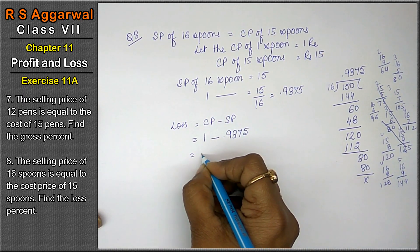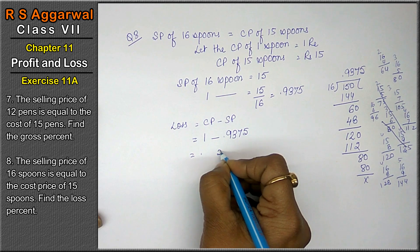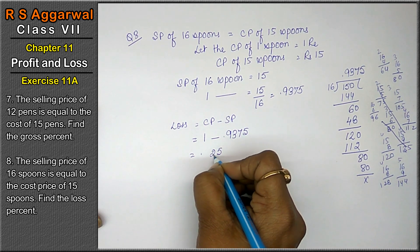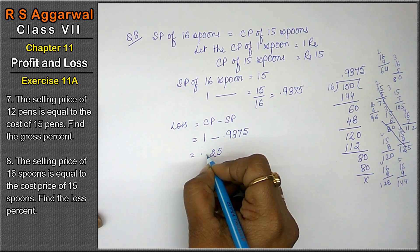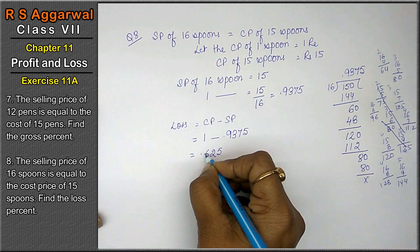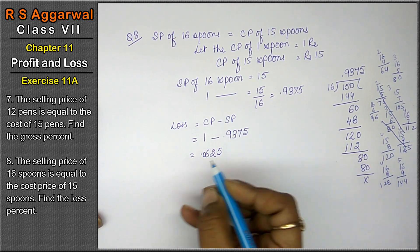Now, what is the loss? 1.0 minus 0.9375: 10 minus 5 is 5, 9 minus 7 is 2, 9 minus 3 is 6, and 9 minus 9 is 0. So loss is 0.0625.